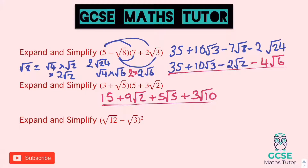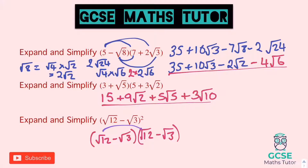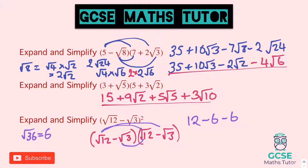And on to the last one: (√12 − √3) squared. Let's rewrite that as (√12 − √3)(√12 − √3). Root 12 times root 12 is root 144, so we get 12. Root 12 times negative root 3 is negative root 36 — root 36 is 6, so we get minus 6. Negative root 3 times root 12 is another negative 6. And negative root 3 times negative root 3 is positive — negative times negative is positive root 9, which is plus 3. So we've got 12 take away 6, take away 6, add 3. 12 take 6 is 6, take another 6 is 0, add 3 leaves an answer of 3.